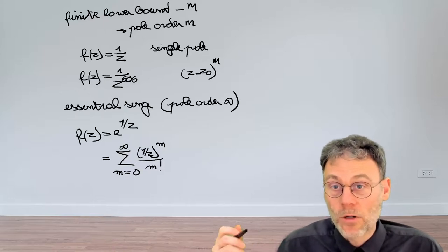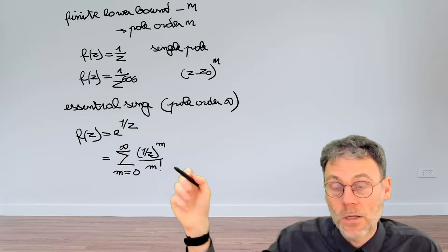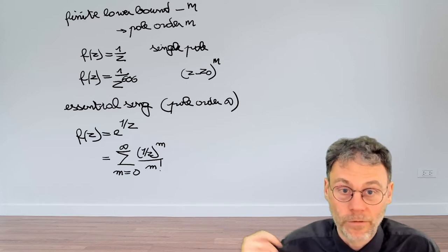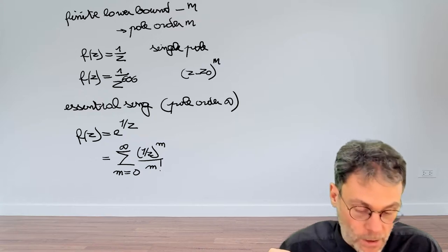Which is a trick that you cannot play with the essential singularity, because then you would need to multiply with z minus z0 to the power of infinity, which does not make a lot of sense, frankly.